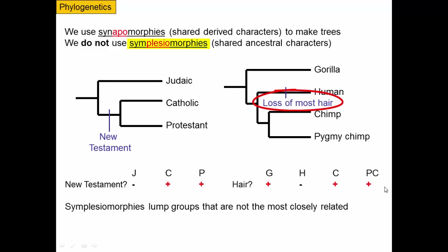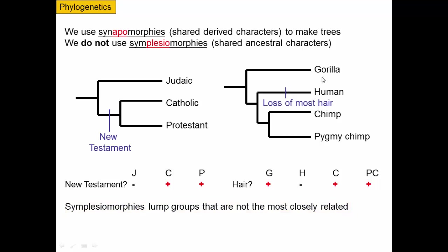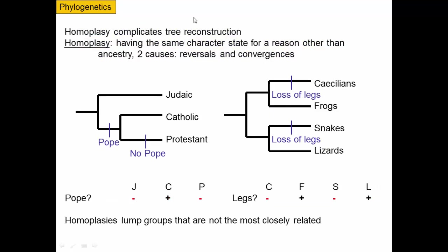A symplesiomorphy would cause us to get the wrong idea about the relationships of these taxa — symplesiomorphies lump together groups that are not the most closely related. So when we're trying to figure out a phylogeny, we need to use synapomorphies and not symplesiomorphies. When making phylogenies, we also want to avoid something called homoplasy, which complicates tree reconstruction. Homoplasy is the technical term for having the same character state for a reason other than ancestry, and there are two causes: reversals and convergences.